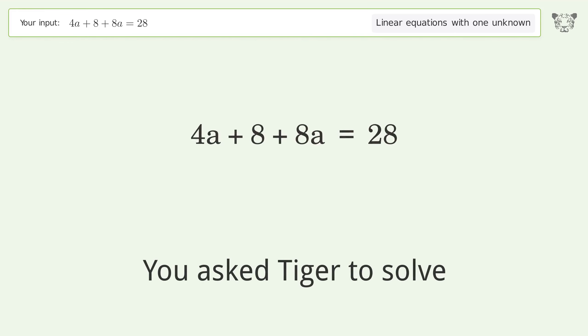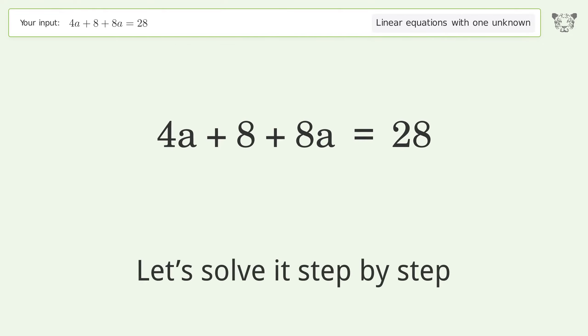You asked Tiger to solve this. It deals with linear equations with one unknown. The final result is a equals 5 over 3. Let's solve it step by step. Simplify the expression.